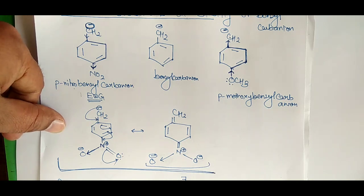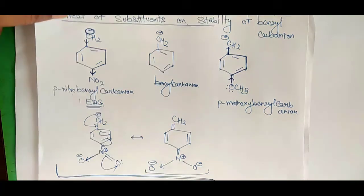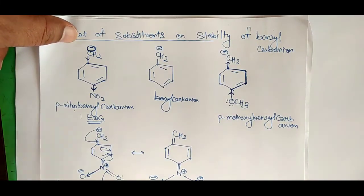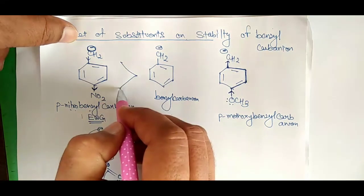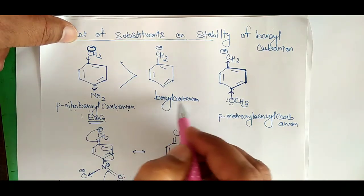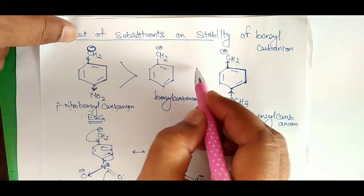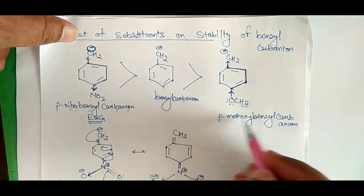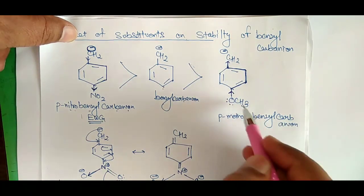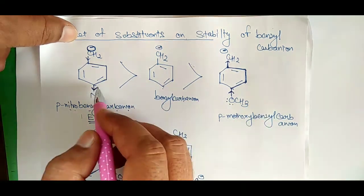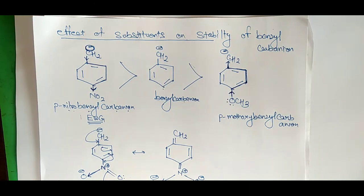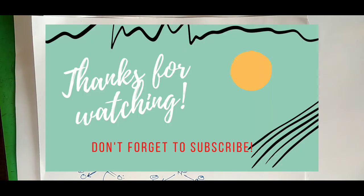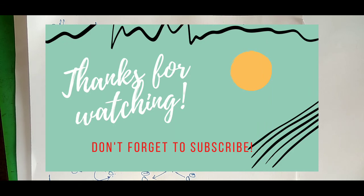In conclusion, paranitrobenzyl carbene is the most stable, benzyl carbene is intermediate, and paramethoxybenzyl carbene is the most unstable of the three. Thank you friends — if you like this video, please like it, subscribe to my channel, and comment.